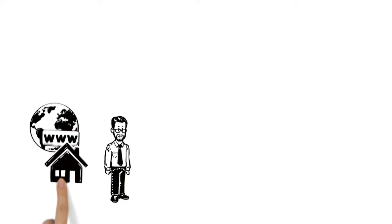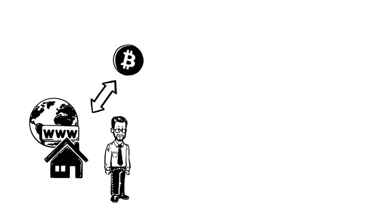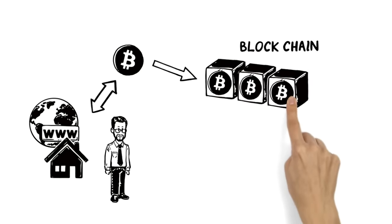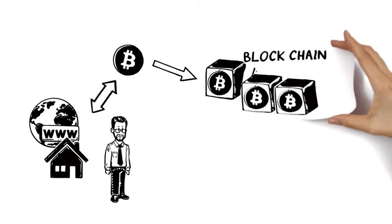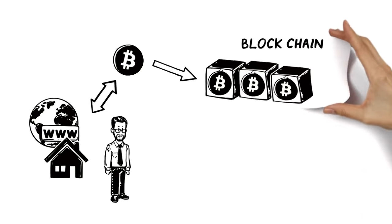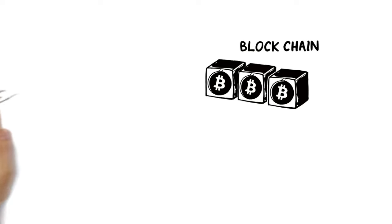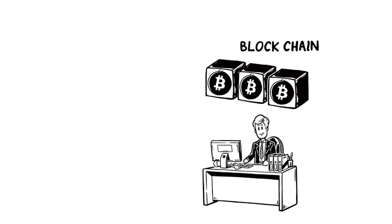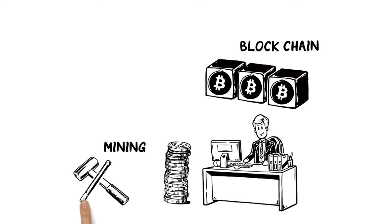Users each have their own address, from which they can send and receive Bitcoins. A collection, or block, of these transactions is then added to the blockchain, Bitcoin's equivalent of a bank's ledger. Users that maintain this form of accounting are rewarded with new Bitcoins. This is known as mining.